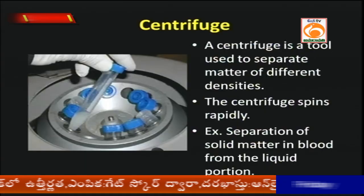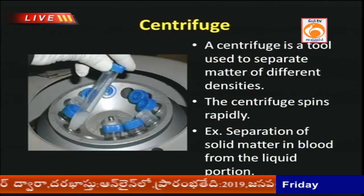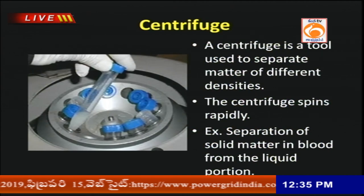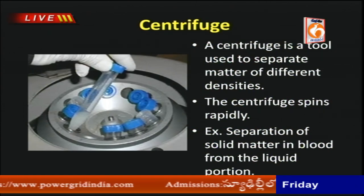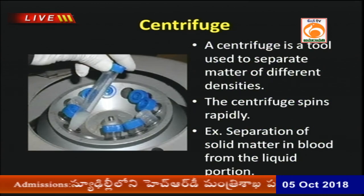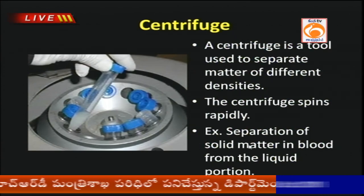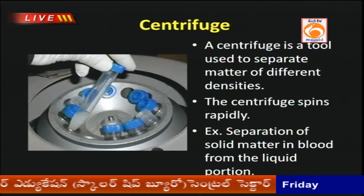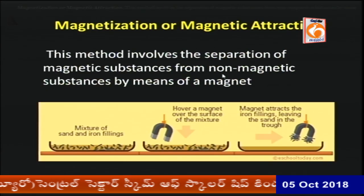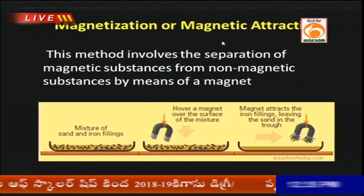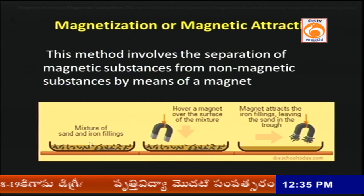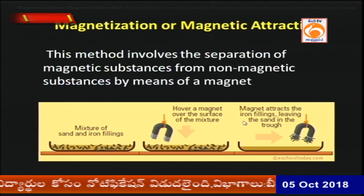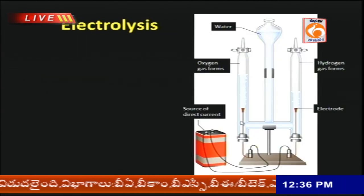Centrifugation is used in the laboratory for separating different groups in salt analysis. On a large scale, a centrifuge instrument separates blood components for analysis. Magnetic attraction is used for substances with magnetic properties — by using a simple magnet, the magnetic substance can be separated from a mixture.